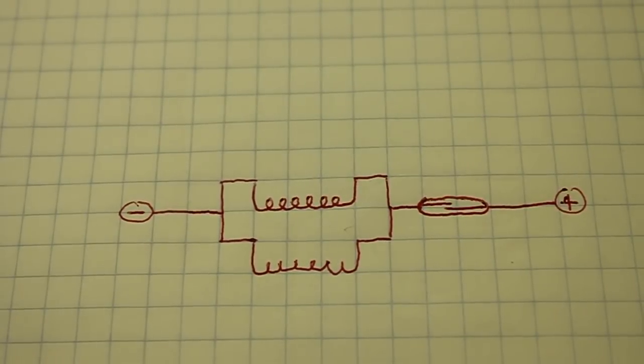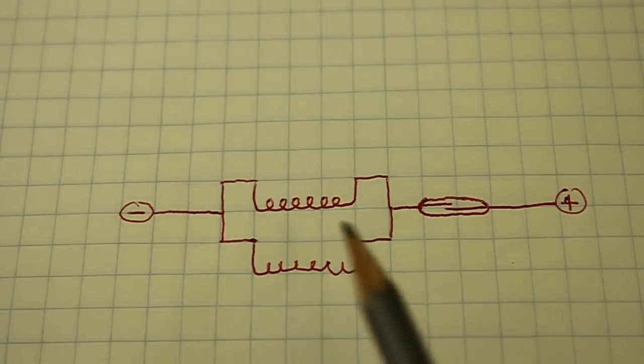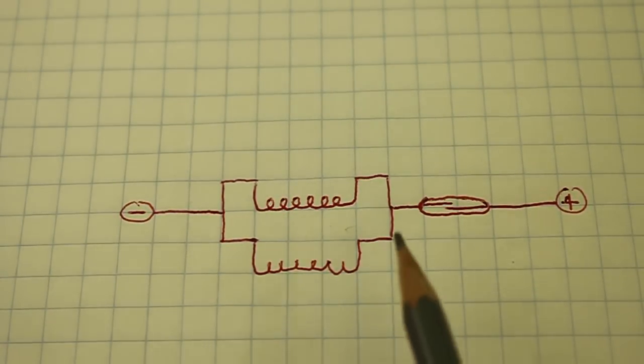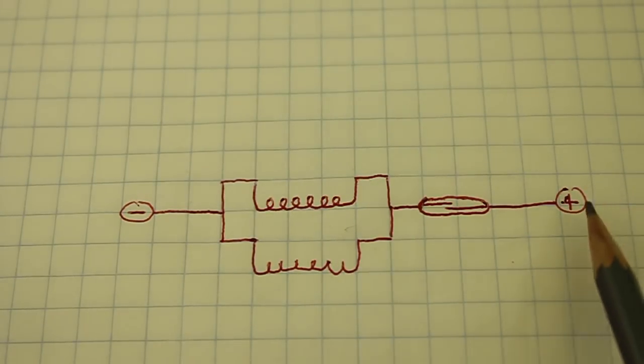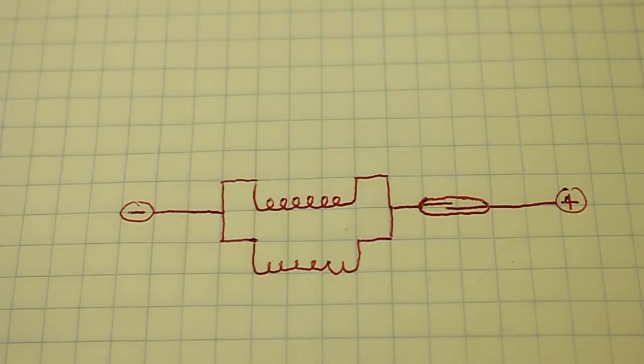The circuit is extremely simple. We have the two coils in parallel, then the reed switch, and we connect the positive of the power supply here and negative here.